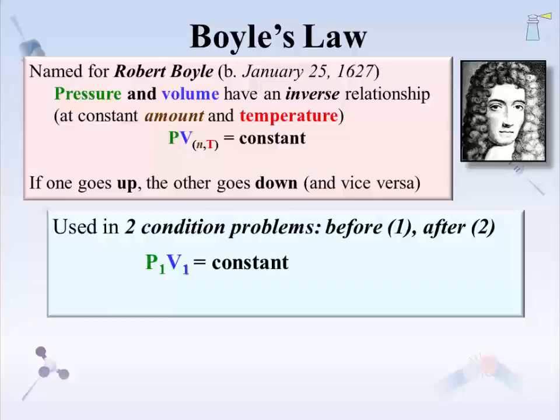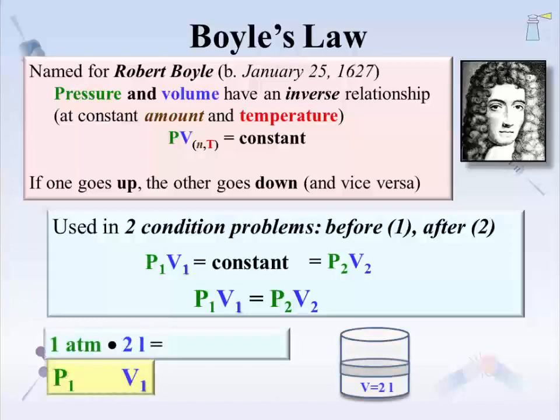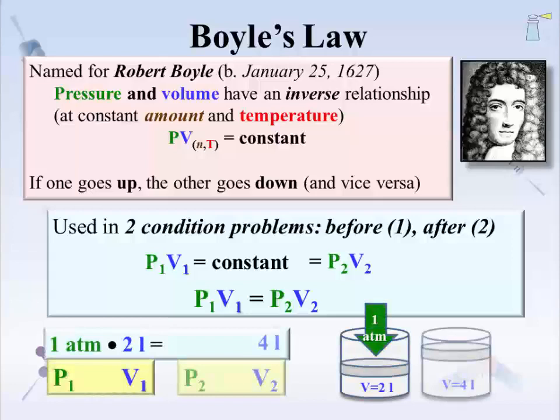The strength of Boyle's law is that it can be used to predict pressure-volume behavior in a before and after scenario. Boyle's law says that P1 times V1 equals P2 times V2. The subscript 1 indicates condition before a change, and subscript 2 indicates the after-change condition. Since both sets of pressure times volume are equal to the same constant, they can be set equal to each other. This four-variable equation can be used to solve for any one of the variables if the other three are given. For example, a 2-liter container under 1 atmosphere pressure: according to Boyle's law, the only way the volume can be increased to 4 liters with constant amount and temperature is for the new pressure to go down, specifically to 0.5 atm. The actual procedure for solving for the value is covered later in the lecture.